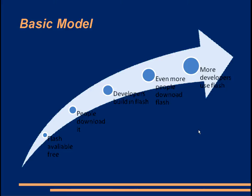The basic model Adobe uses is very simple. They make Flash Player free so that people will download it. Developers build content in Flash after paying Adobe for the software and licenses. In order to view Flash content you need Flash, so developers publishing content in Flash is itself an advertisement for Flash, which leads more people to get Flash. As more people get Flash, more developers want to use Flash — creating a cycle.